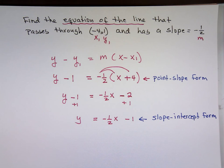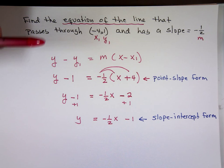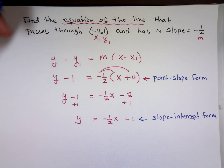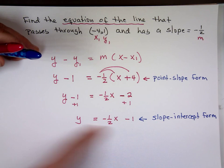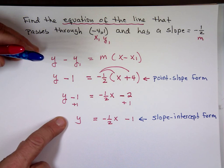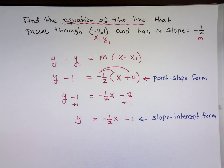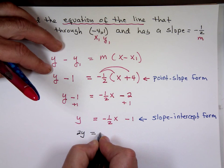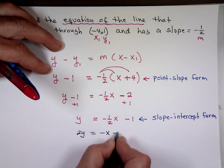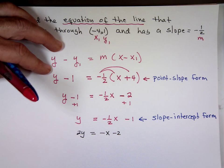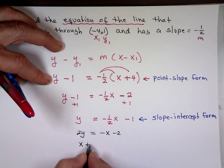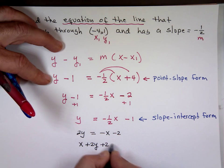To avoid fractions, we get rid of them by multiplying everything by the LCD. In this case multiply by 2, and you get 2y equals negative x minus 2. Move everything to one side, with x written first: x plus 2y plus 2 equals 0. That's called the general form.